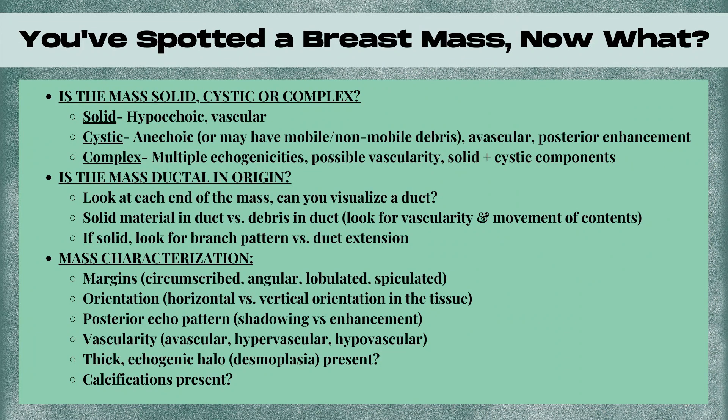You've spotted a mass in the breast — now what should you do? First, determine if the mass is solid, cystic, or complex. A solid mass is going to be hypoechoic and may or may not have vascularity. A cystic mass is going to be anechoic or may have mobile or non-mobile debris inside, and will be avascular with posterior enhancement. A complex mass is a mixture — both solid and cystic components, multiple echogenicities, heterogeneous, and possibly vascularity in the solid components.